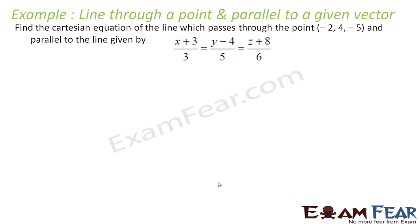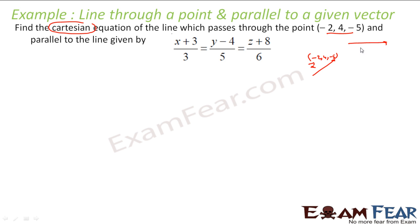We will find the Cartesian equation of the line which passes through a given point and is parallel to a given vector. So, we have some point here — let's say minus 2, 4 and minus 5 — and this line is parallel to some l vector.